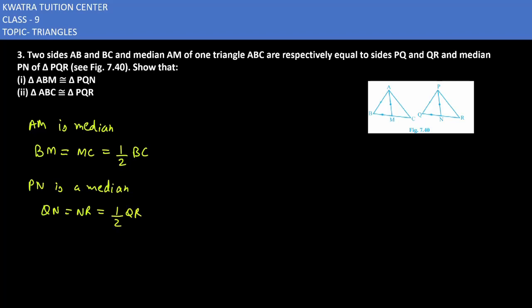So now what I can see is from equation 1 and 2, because we know BC is equal to QR, I can equate both of them. So half of BC is equal to half of QR. So half of BC is BM and half of QR is QN. We know BM and QN are equal. We are able to prove this.